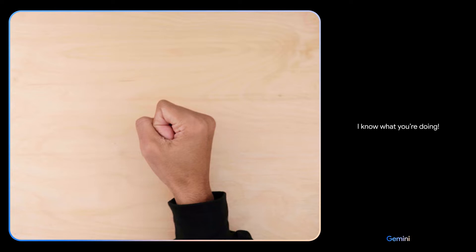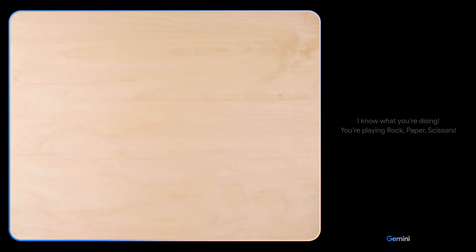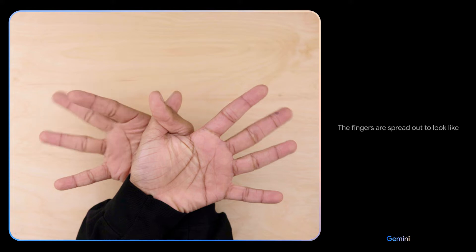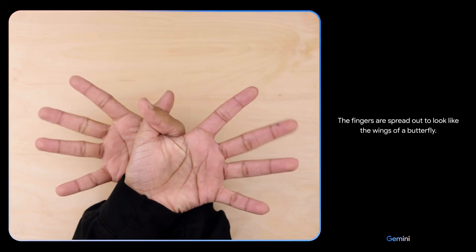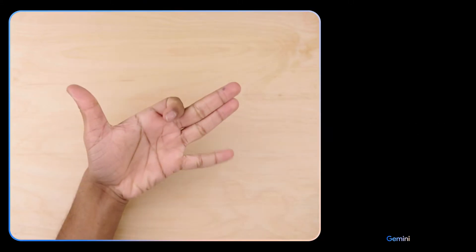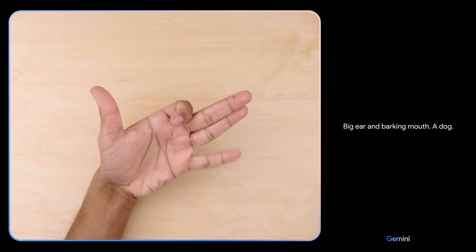I know what you're doing. You're playing rock, paper, scissors. What do you see now? The fingers are spread out to look like the wings of a butterfly. What's this? Big ear and barking mouth. A dog. Sweet.